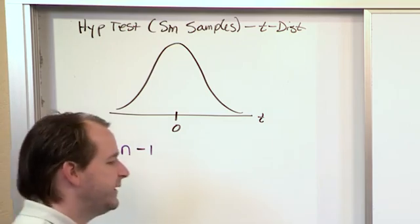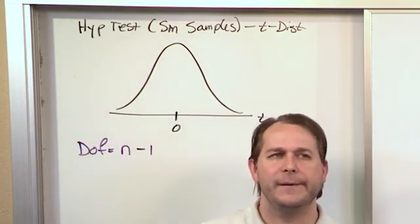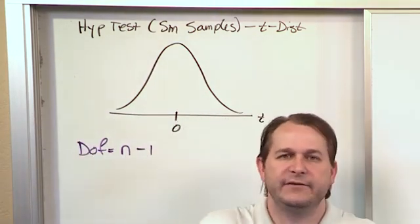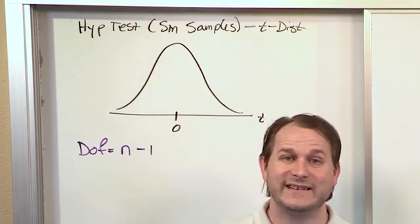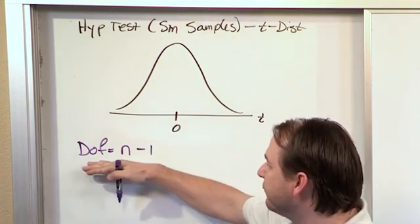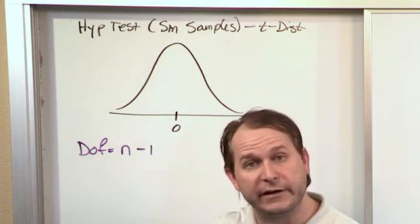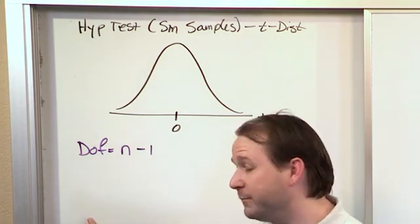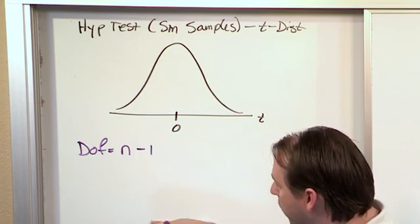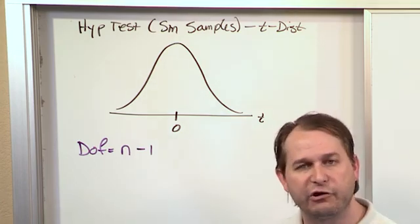So in all of these problems, you're basically going to be told, hey, I'm testing candy bars and I select 17 candy bars to test. Well then, 17 minus 1 is 16. So when I'm using my t distribution, I'll look at 16 degrees of freedom. I'll go down the left hand column to 16 degrees of freedom and I'll go across and read the value of t off the chart in that row.